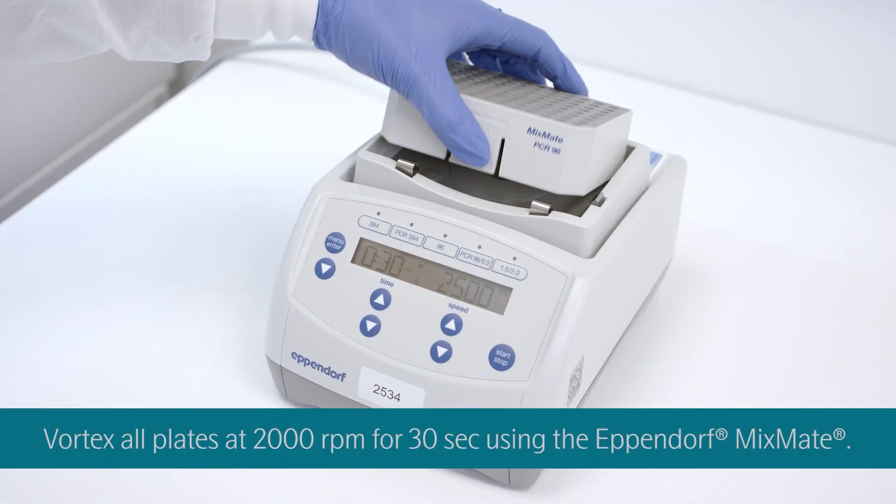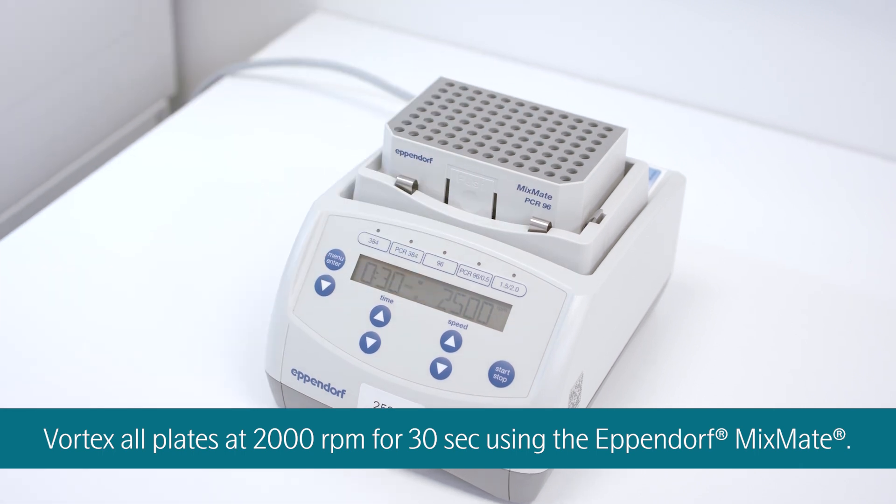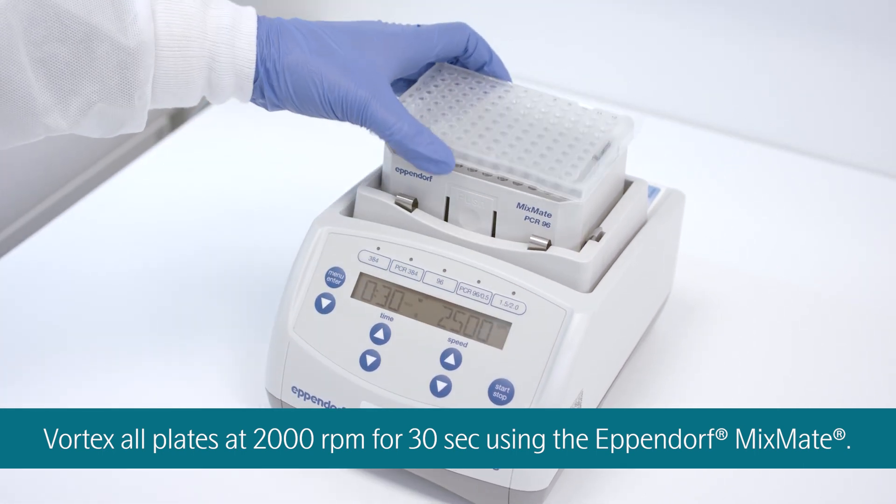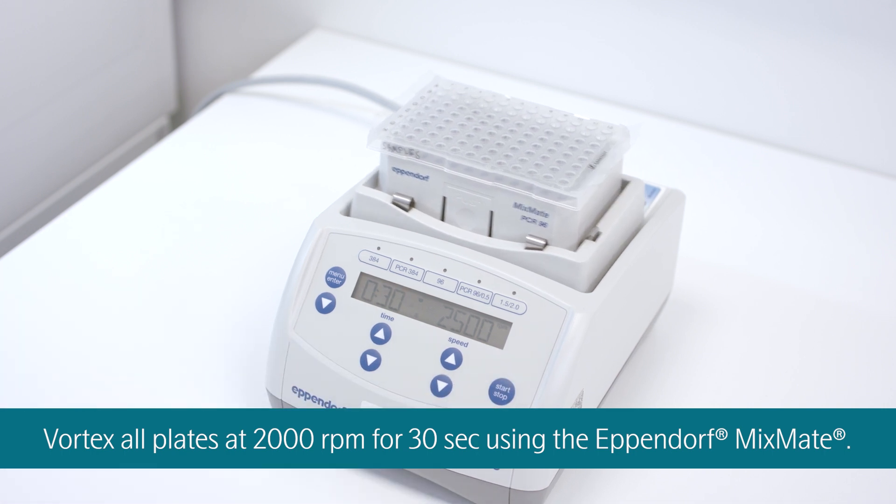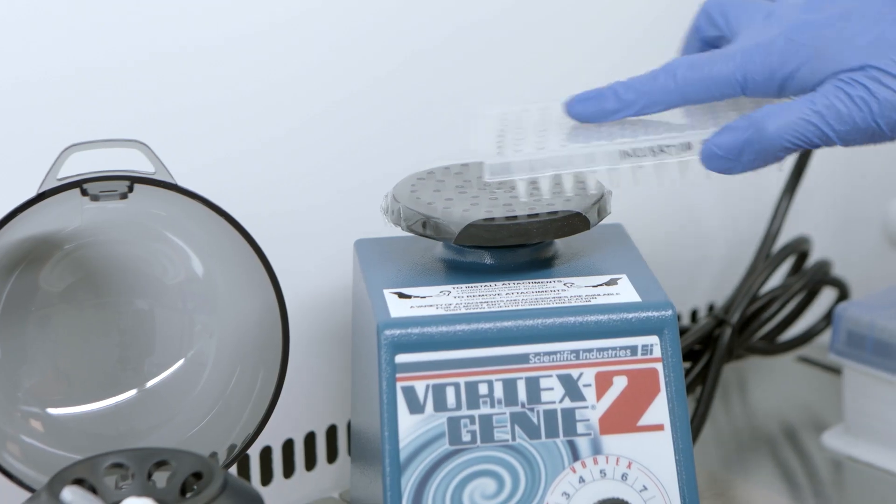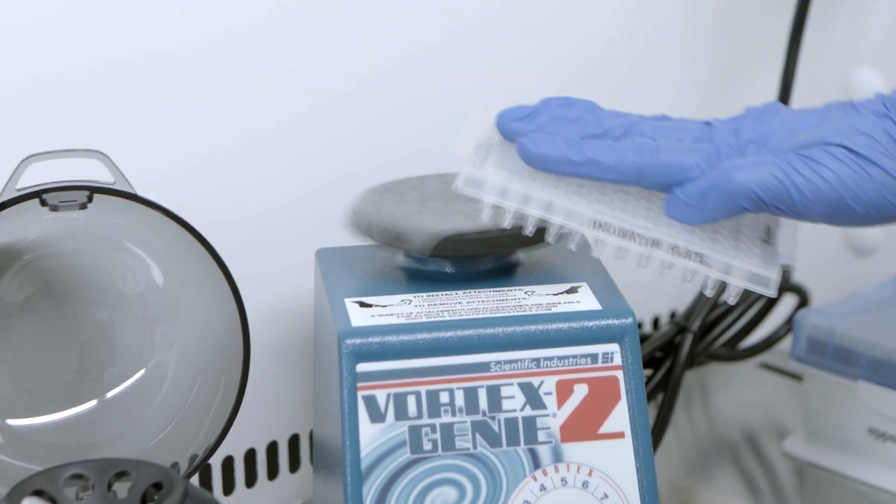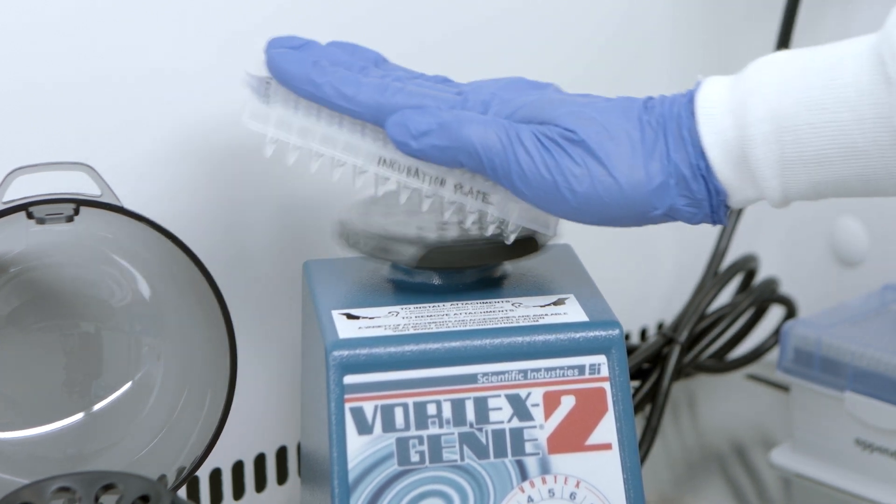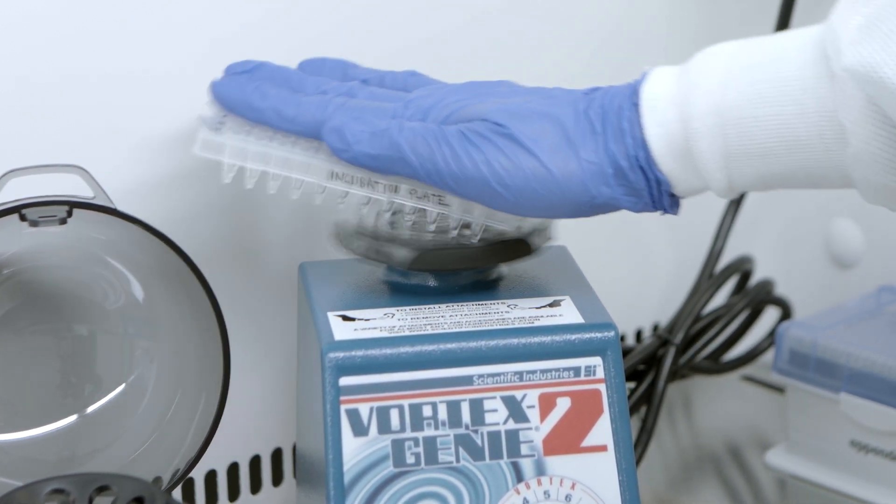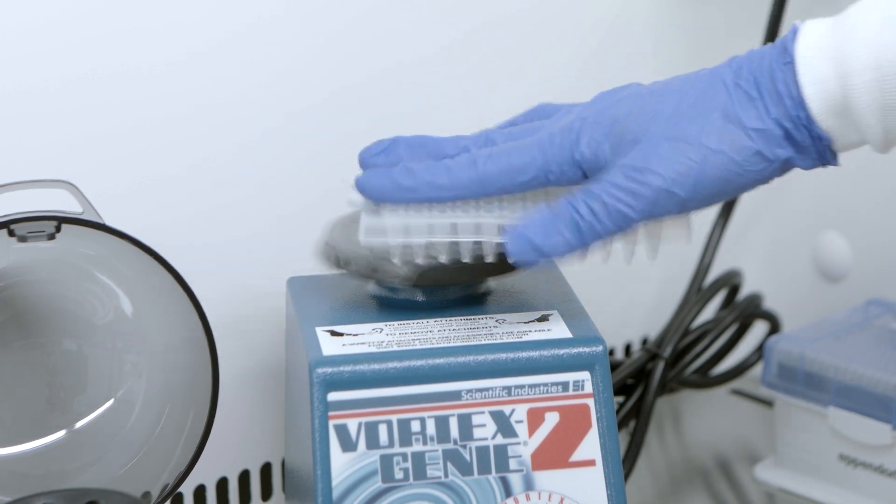Plate vortexing should be performed using the Eppendorf MixMate and the appropriate tube holder. This is required for the pre-PCR plate vortexing, but optional post-PCR. If manual plate vortexing is used post-PCR, it must be done using the technique shown here. Please watch the O-Link vortexing technique video before continuing.